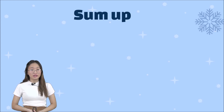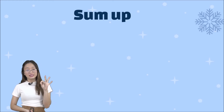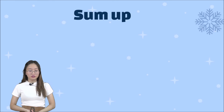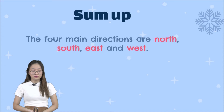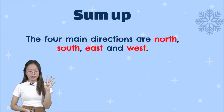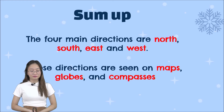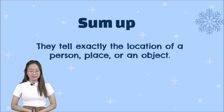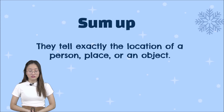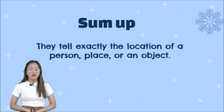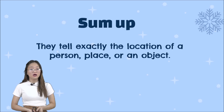So that is our lesson — the four directions: north, south, east, and west. To sum up: the four main directions are north, south, east, and west. These directions are seen on maps, globes, and compasses. They tell exactly the location of a person, place, or object. Using the simple illustration with the four directions, it helps us locate the exact location of objects.